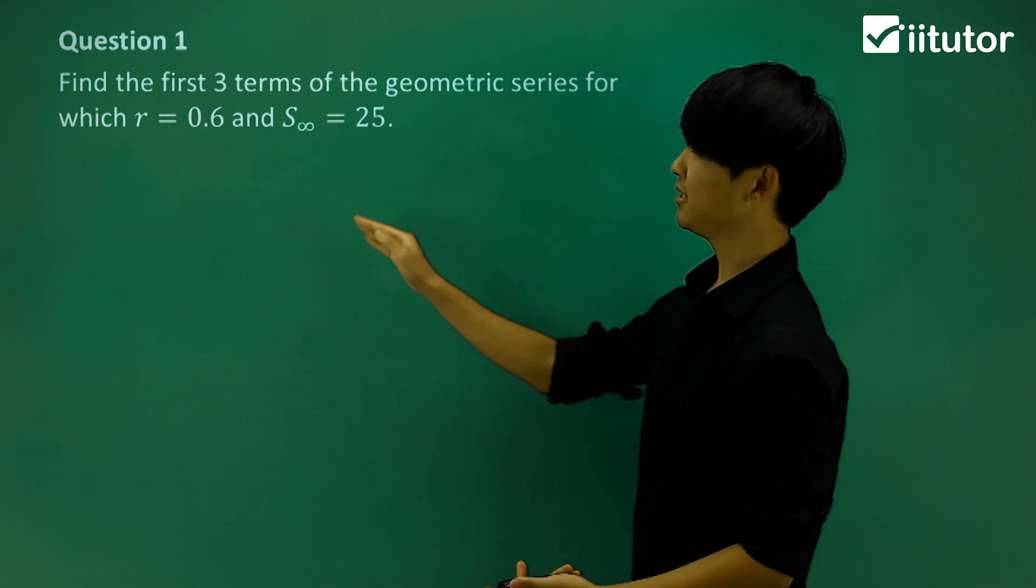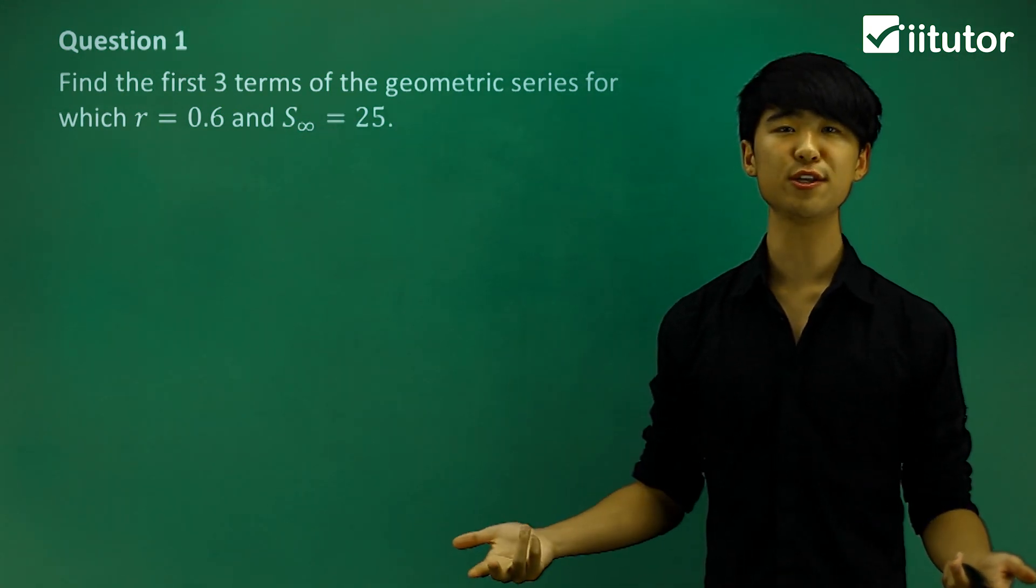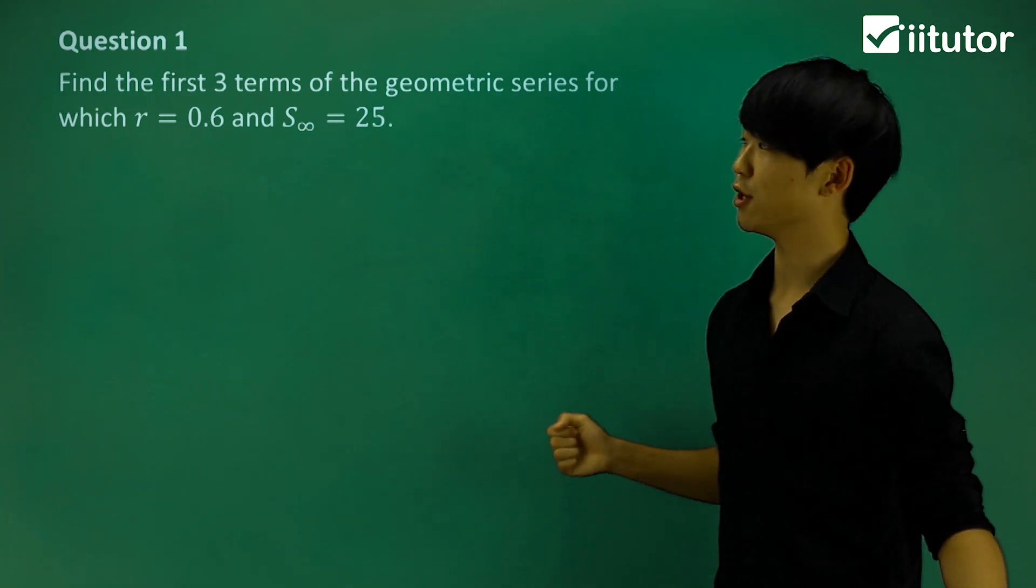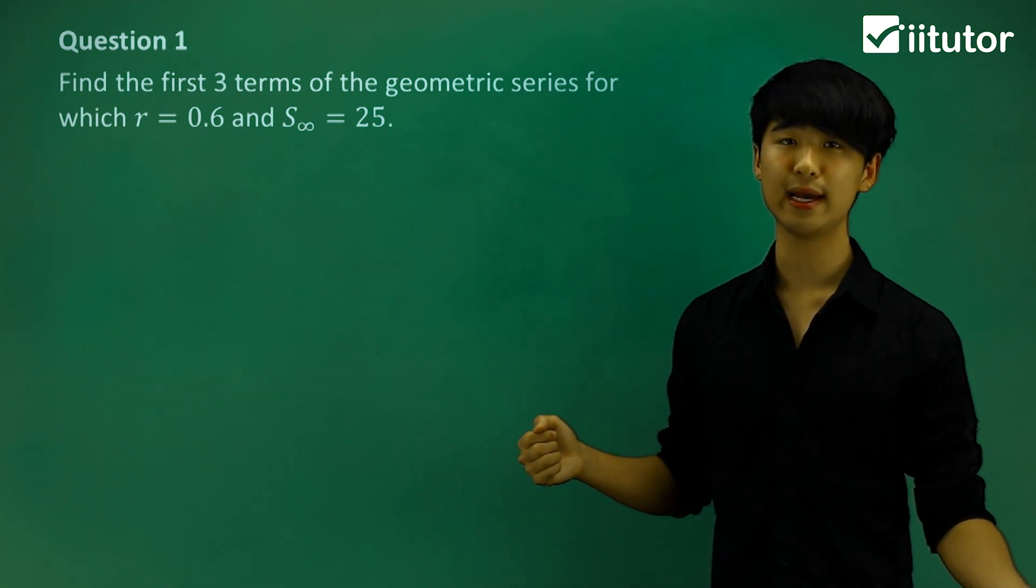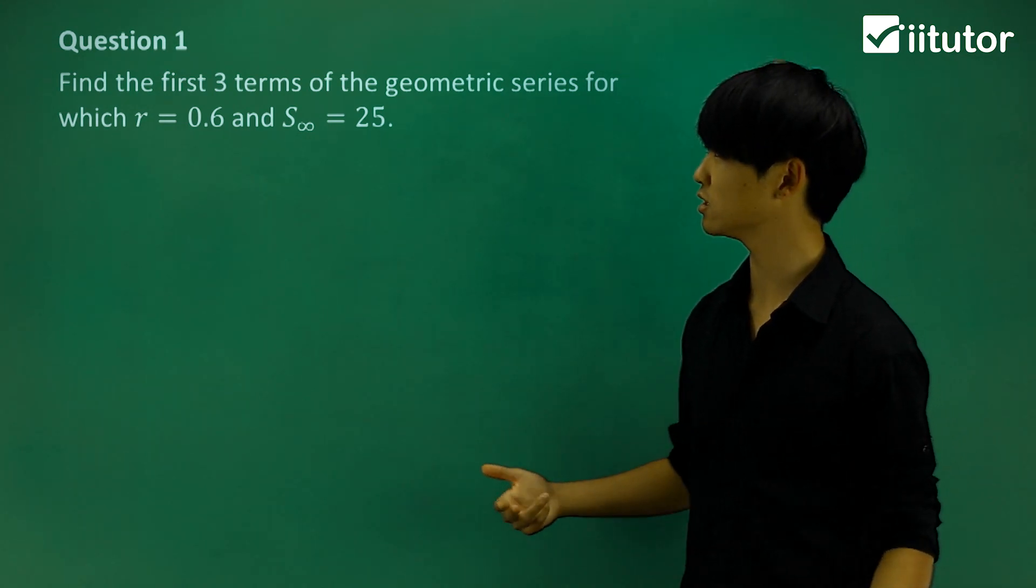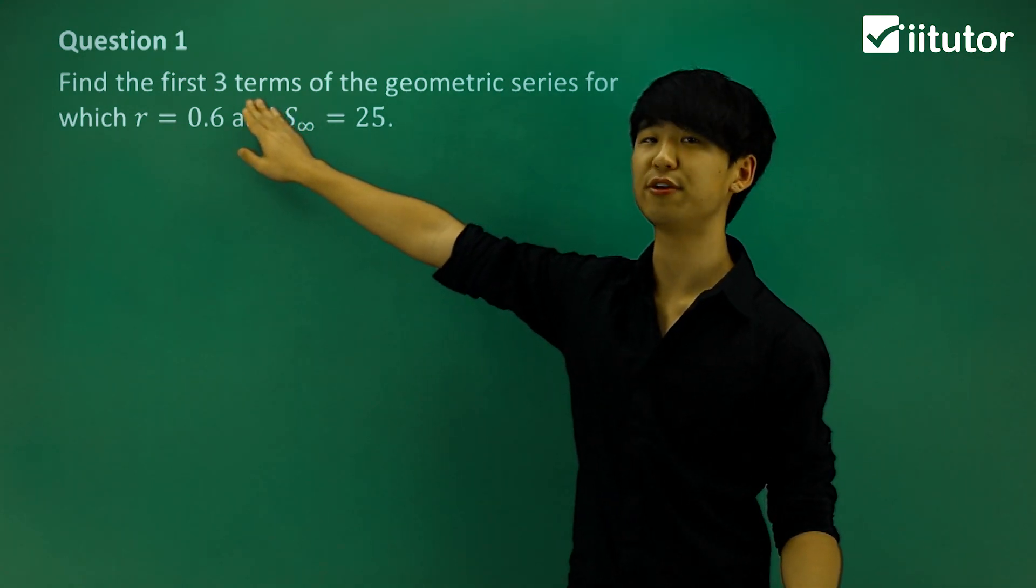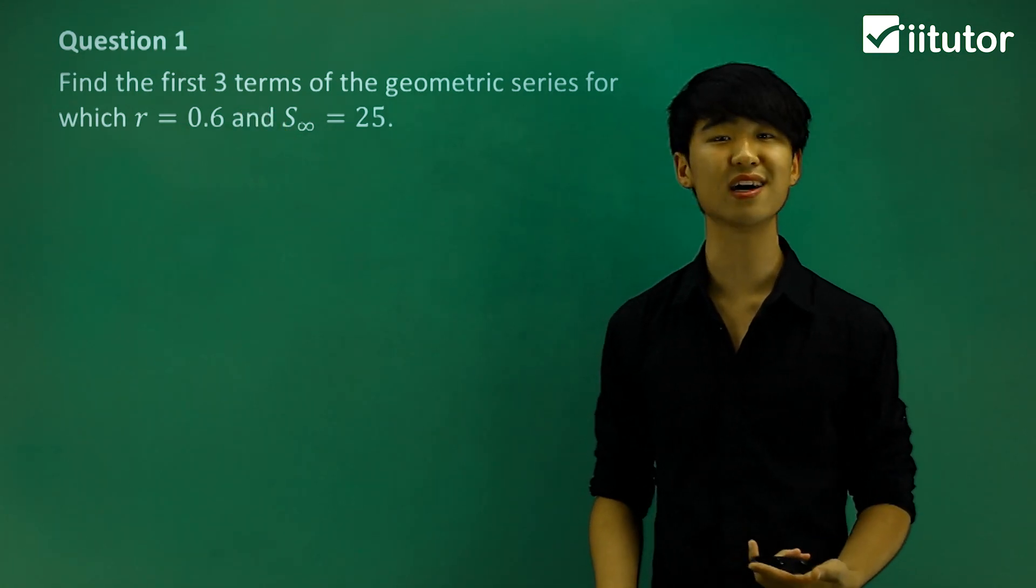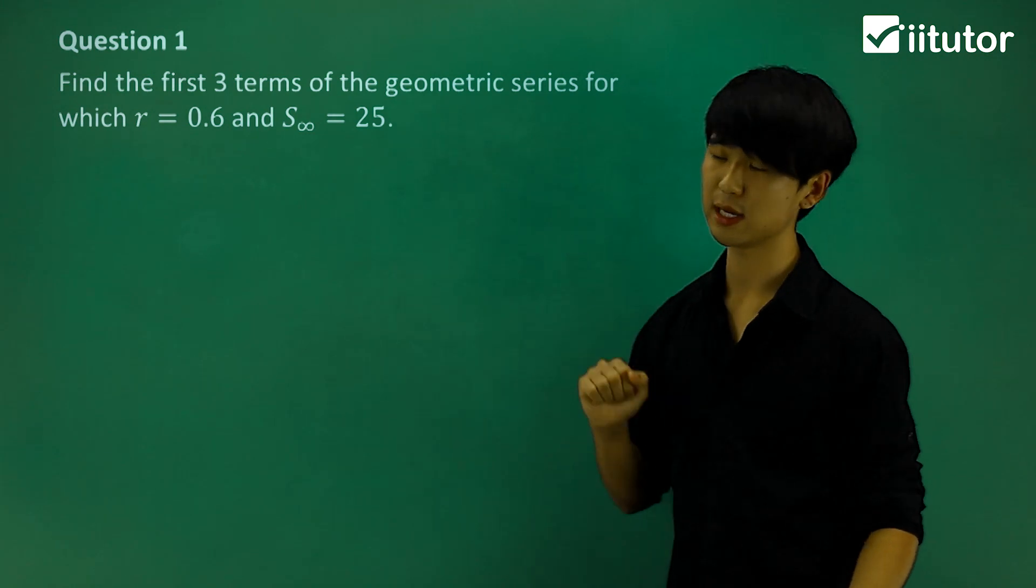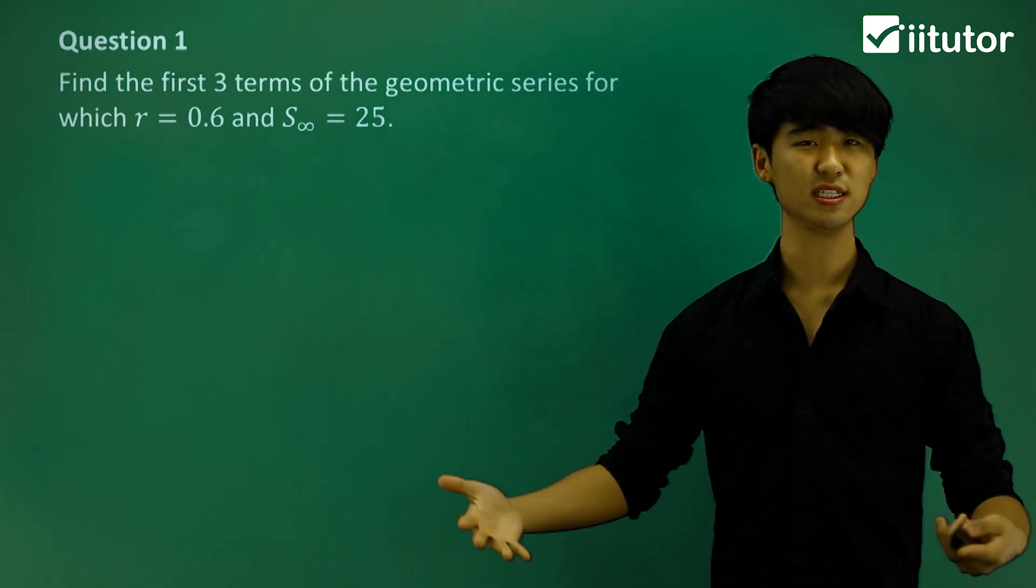In question one, find the first three terms of the geometric series for which r equals 0.6 and the sum to infinity is 25. The question is asking for the first three terms. If we don't know how to start, let's write everything we do know and translate the information into something more mathematical.